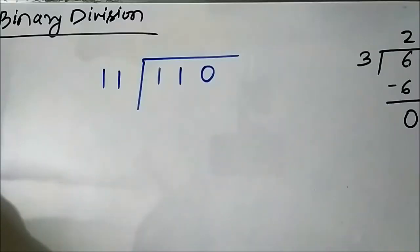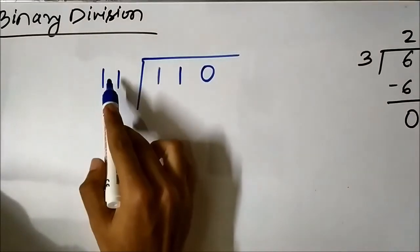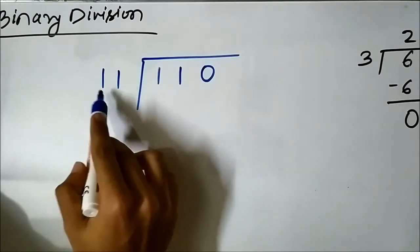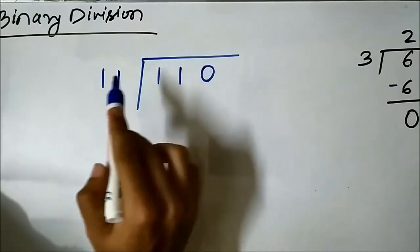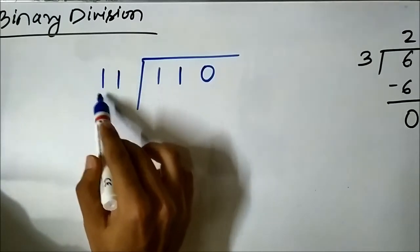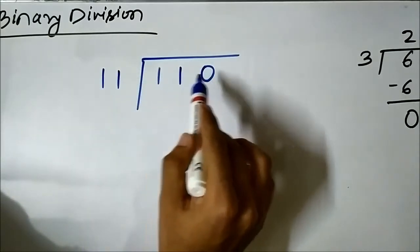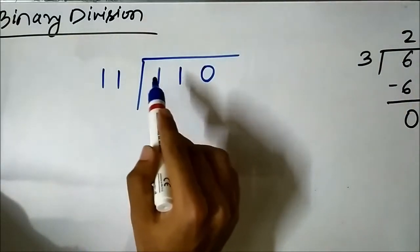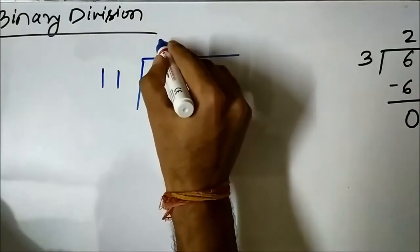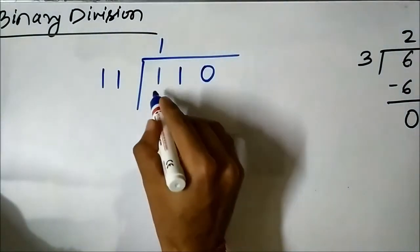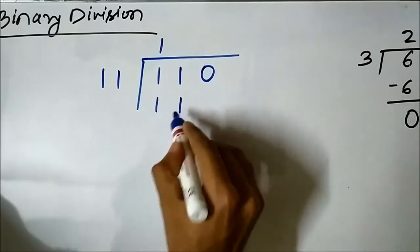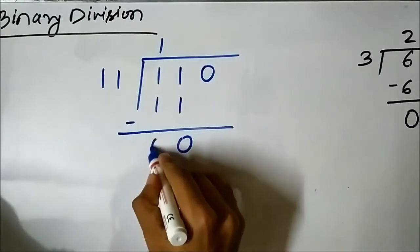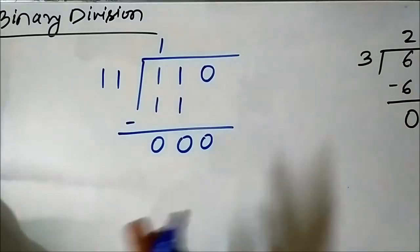3 in binary is 1 1, which is a 2-bit number, while 6 (1 1 0) is a 3-bit number. We are going to first compare the divisor with the first two bits of the dividend. The first two bits are 1 and 1, which match exactly. So in the quotient we are going to put 1.